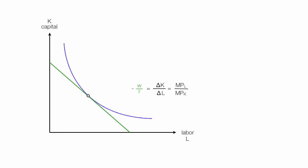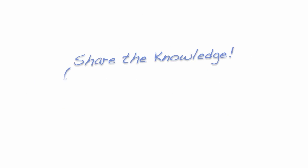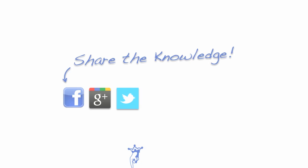Notice the ISO cost line — the green line — is tangent to the ISO quantity line, the blue line. This relationship is also known as the marginal rate of technical substitution, or MRTS. I'm going to work through this measurement in the next video, using numbers to illustrate the same concept. As always, remember to share the knowledge — you can find this on Facebook, Google Plus, or Twitter. Questions and comments below — please like the video and don't forget to subscribe.